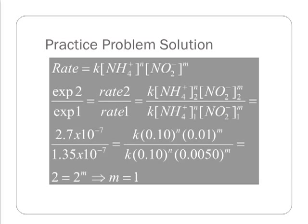Then I go ahead and plug in the actual data that was collected from the experiment. So 2.7 times 10 to the minus seven is the rate from experiment two. 1.35 times 10 to the minus seven is the rate from experiment one. I have my Ks still. And I plug in the actual concentrations of ammonium, NO2 minus from experiment two, ammonium, and NO2 minus from experiment one.